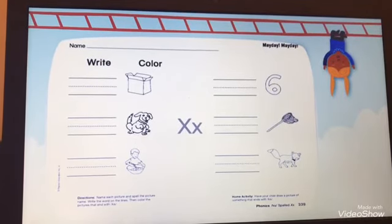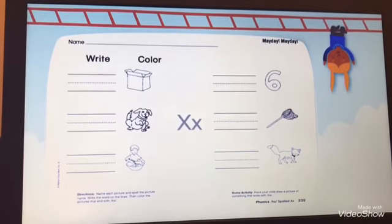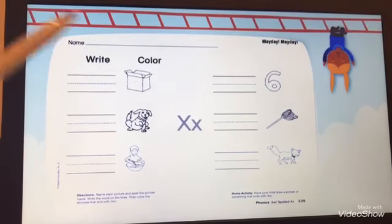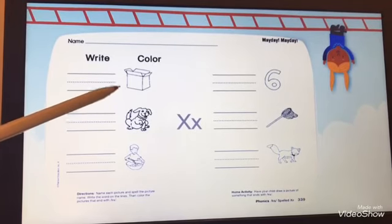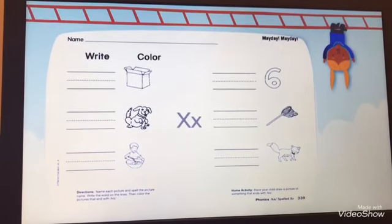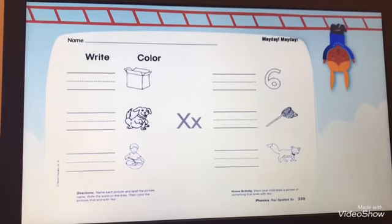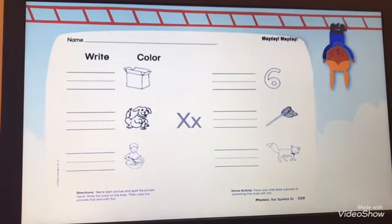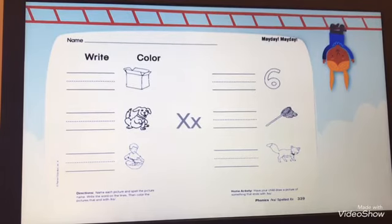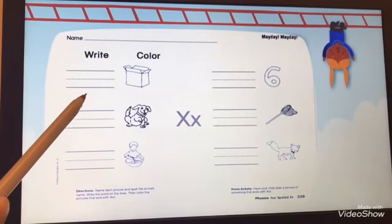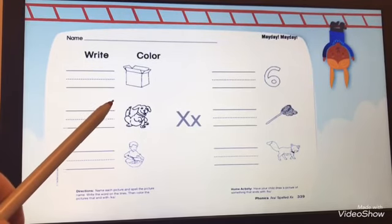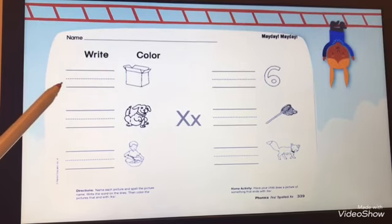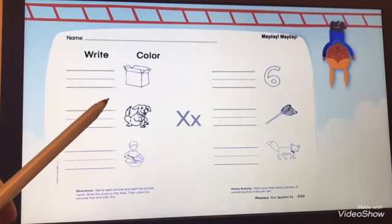Now let's see the first picture. Who can tell me what is this? It's a box. Box, yes, very good! Now I want you to hold your pencil and start to write with me: B, O, X. Box.